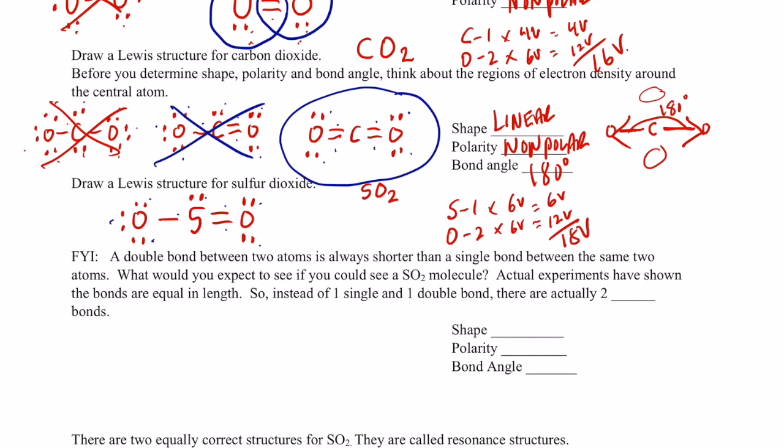Now, in reality, we're not finished. It turns out that a double bond between two atoms is always shorter than a single bond. I'm going to say that again: a double bond between two atoms is always shorter than a single bond. So what would you expect to see if you could see a sulfur dioxide molecule using this as your Lewis structure? Well, this would be shorter, this double bond here, than this single bond. So you'd expect one oxygen to be closer than the other. Actual experiments show that the bonds are equal in length. They're the same distance. In fact, they're a little longer than a double bond and a little shorter than a single bond. So instead of having one single and one double, there are actually two one-and-a-half bonds. That double bond is actually shared in both positions.